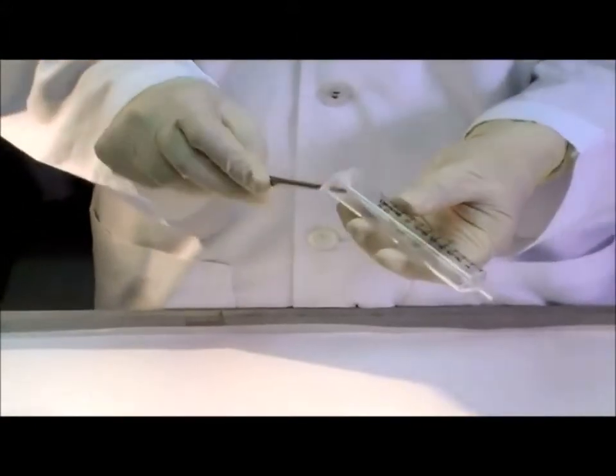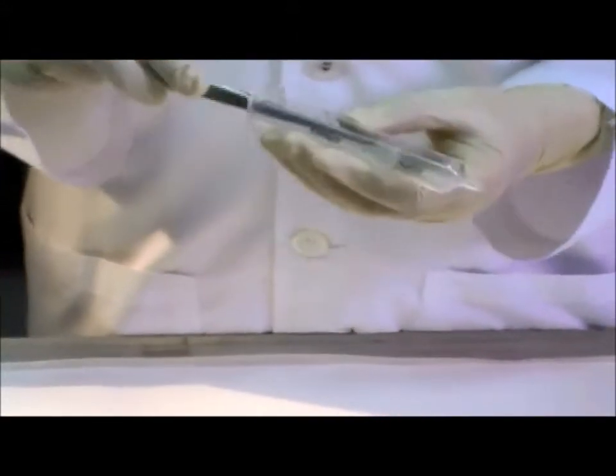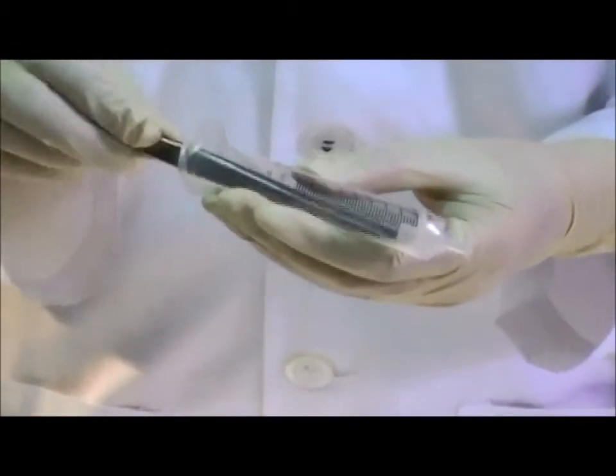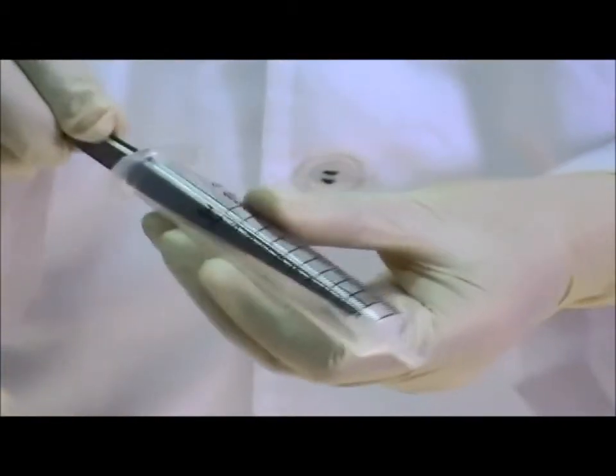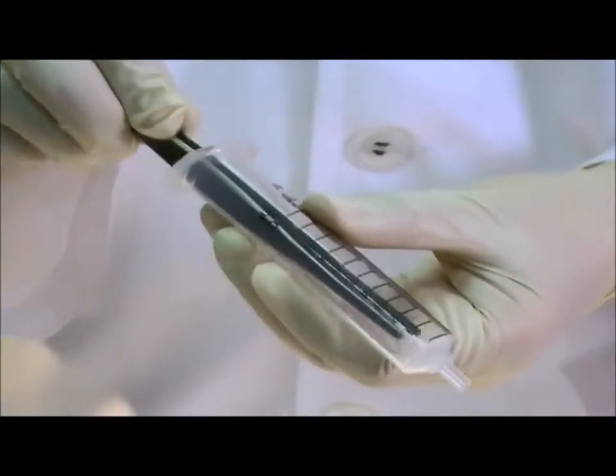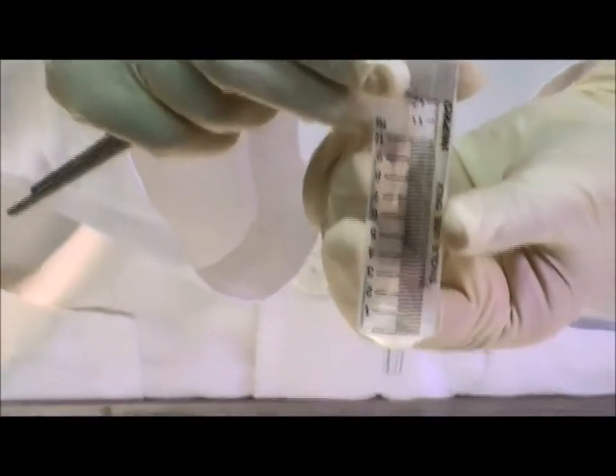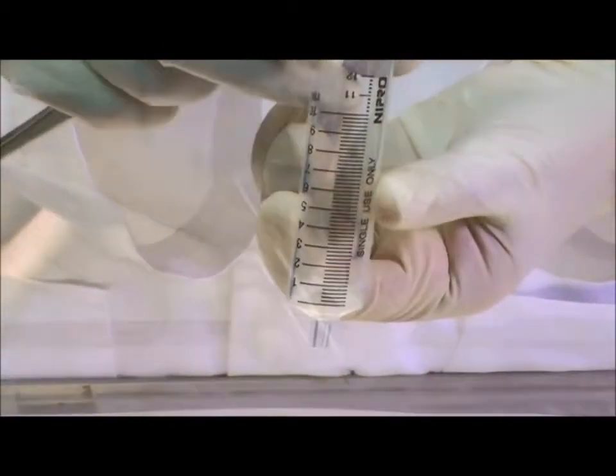Using forceps, lay two 1 centimeter squares of lens paper, or a rectangle folded in half to form two 1 centimeter squared layers, flat at the bottom of the syringe barrel to cover the tip opening.